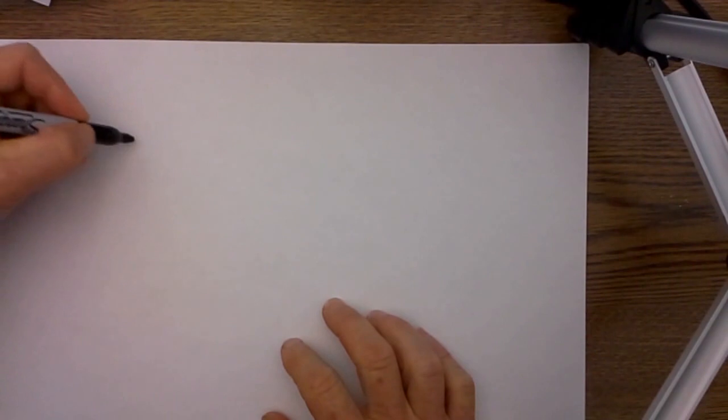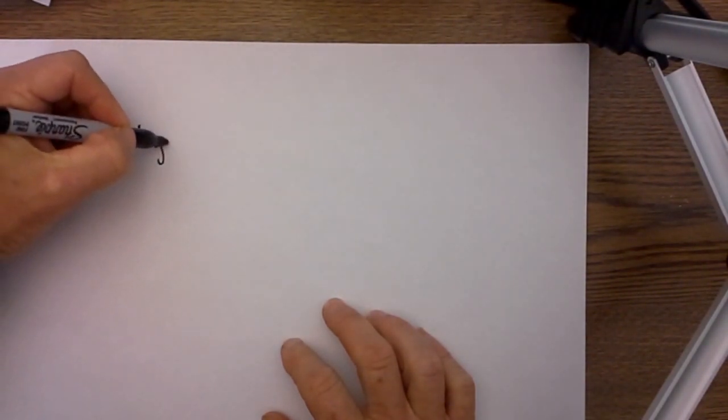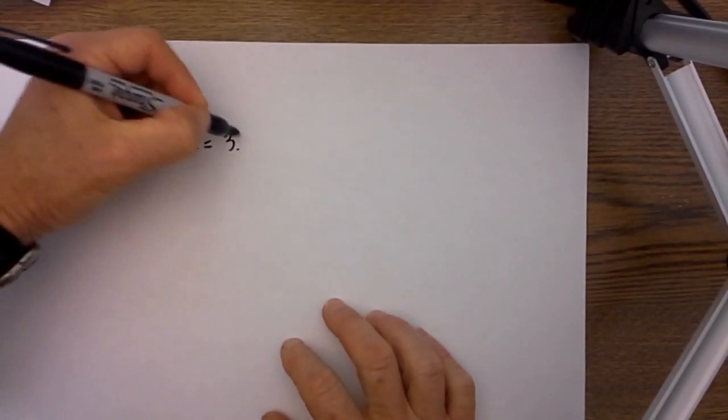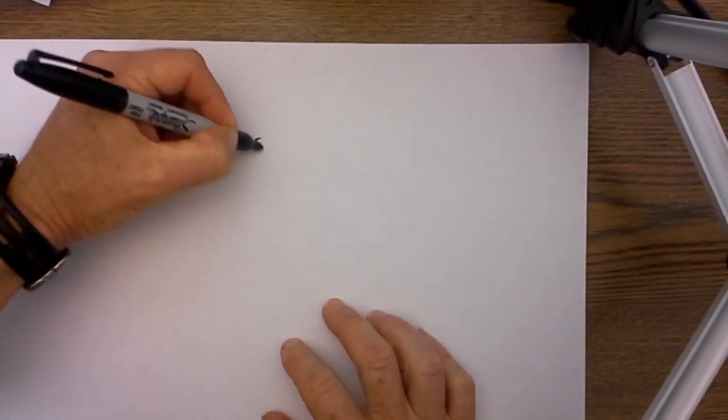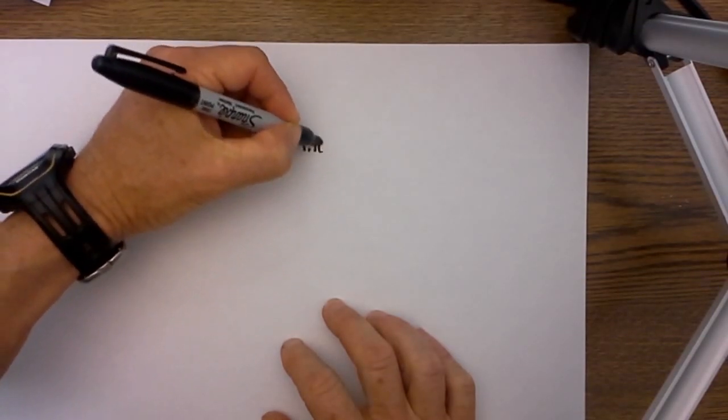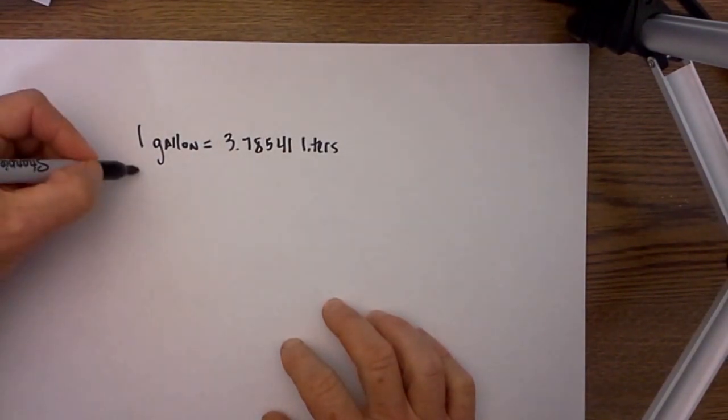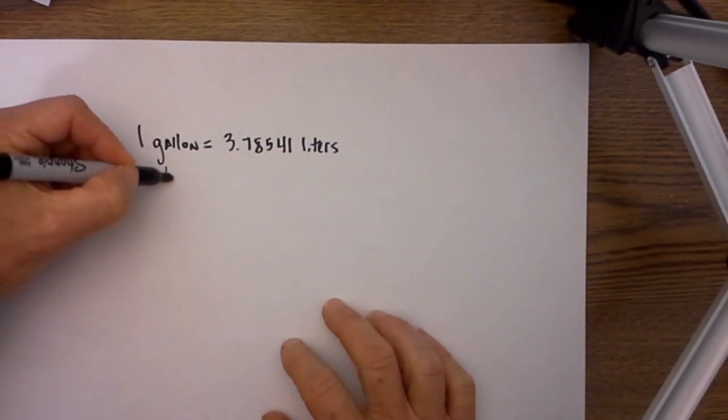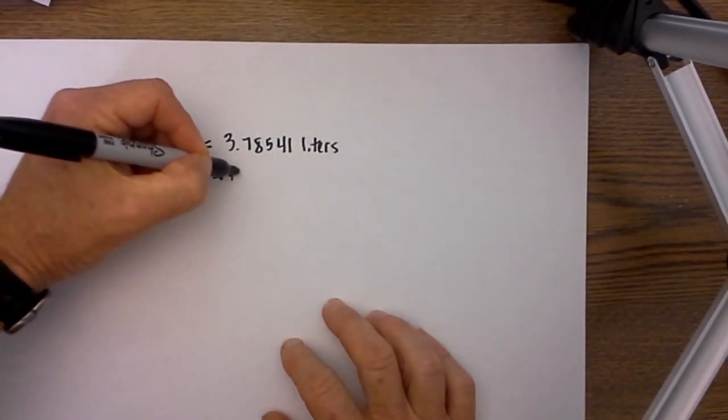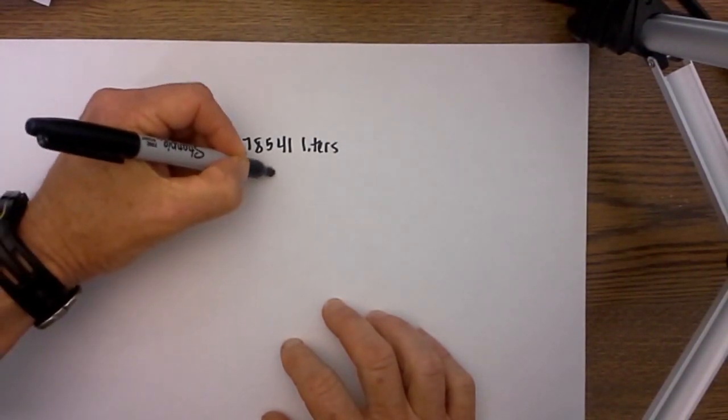Before we begin, let me start by saying 1 gallon, and this is an English gallon not an imperial gallon, is equal to 3.78541 liters, and 1 liter is equal to 0.264172 gallons.